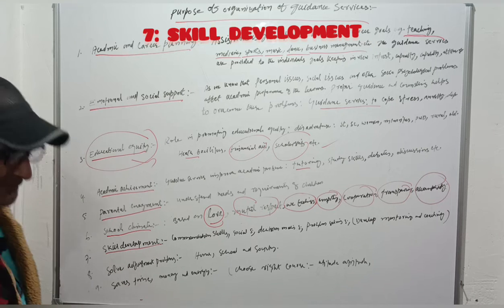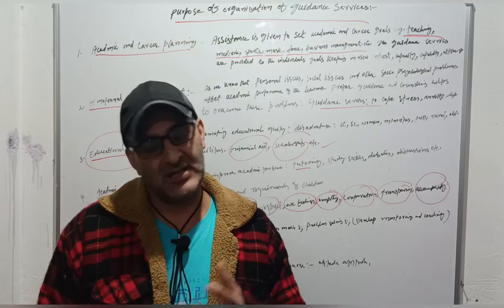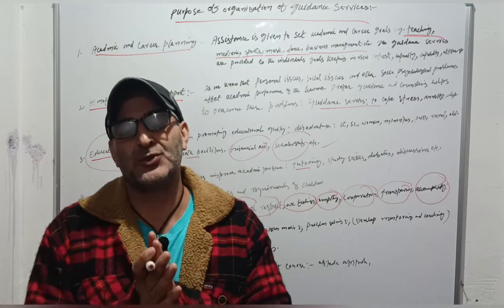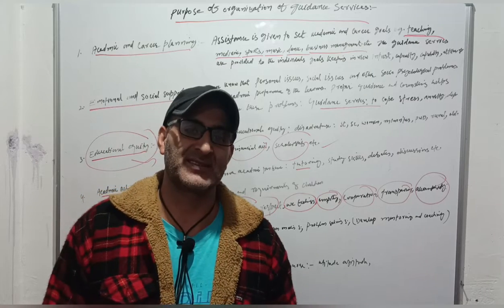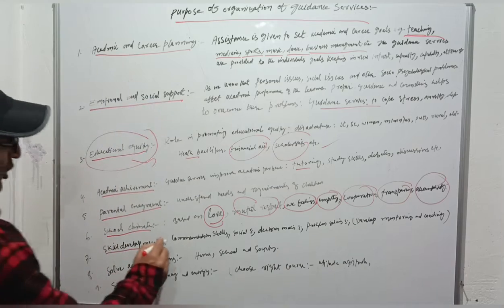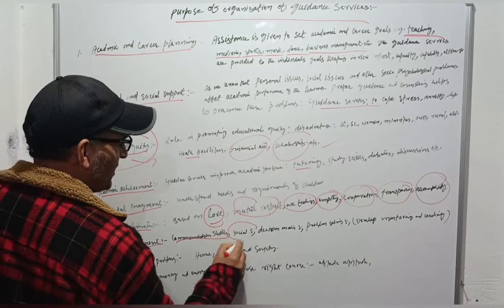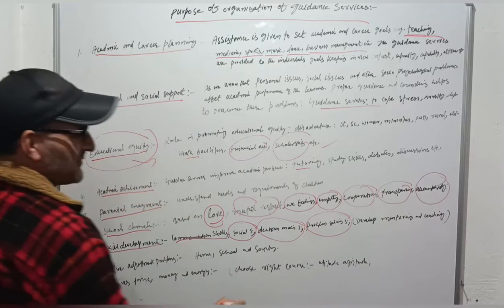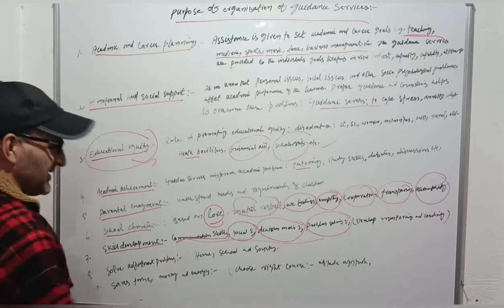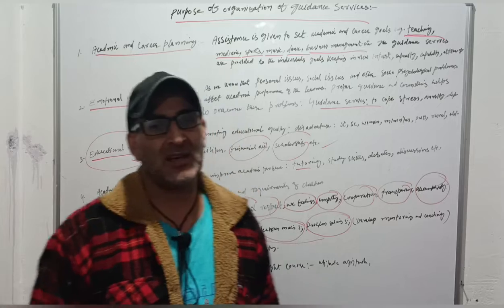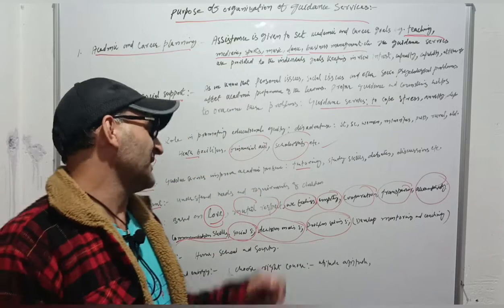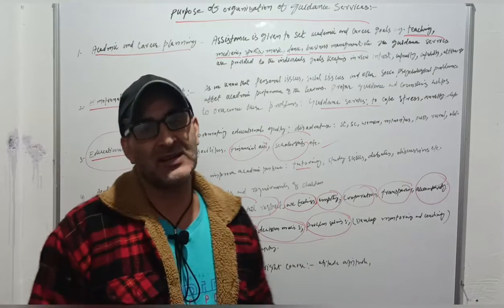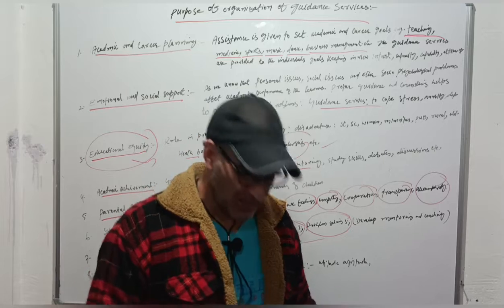Number 7: Skill Development. Guidance services are provided to learners in order to develop communication skills, social skills, decision-making skills, problem-solving skills. All these types of skills can be developed through mentoring and coaching of learners.